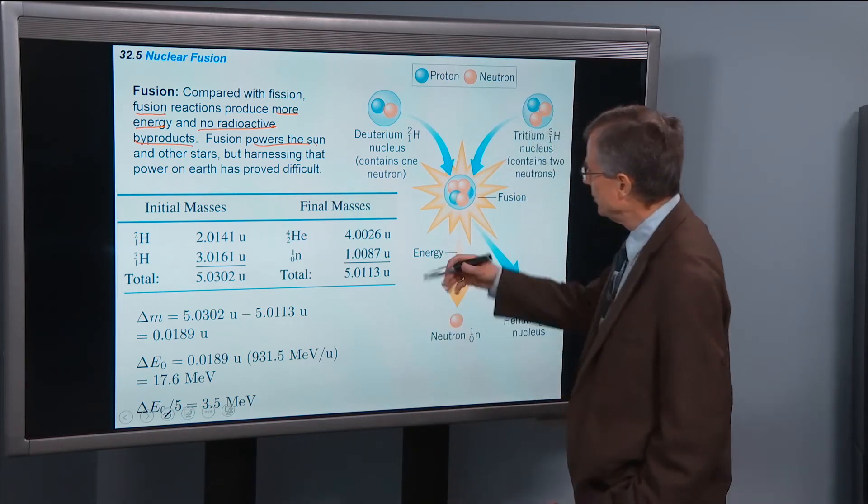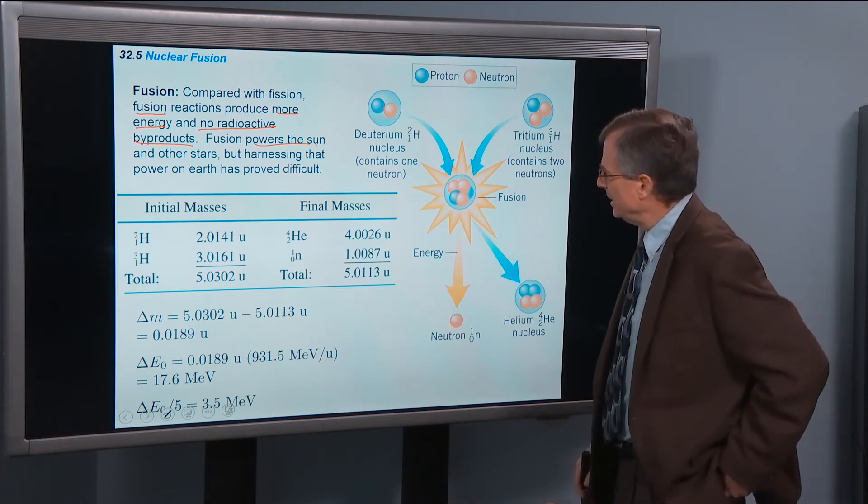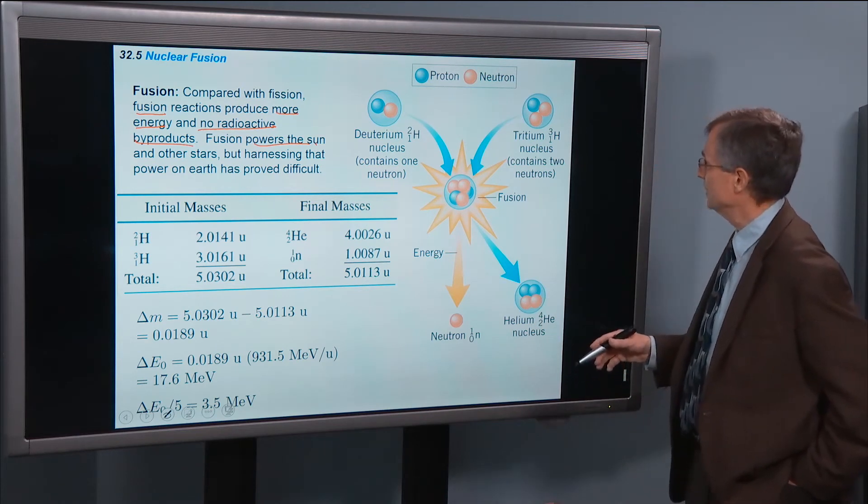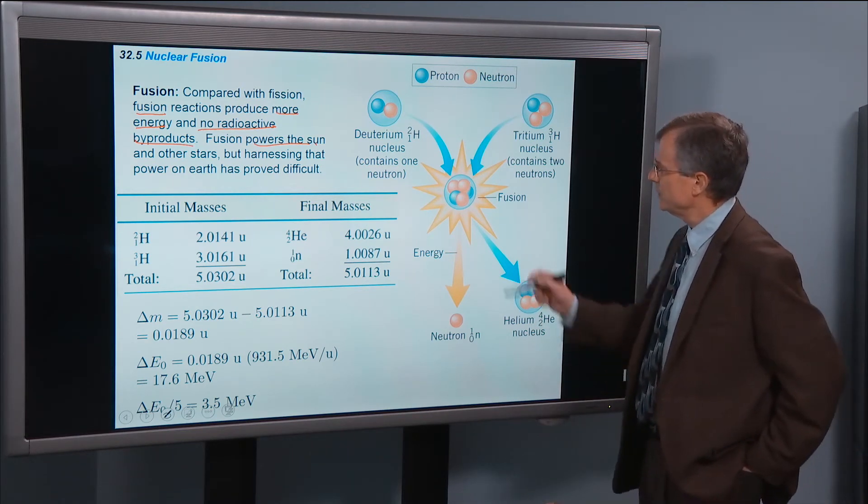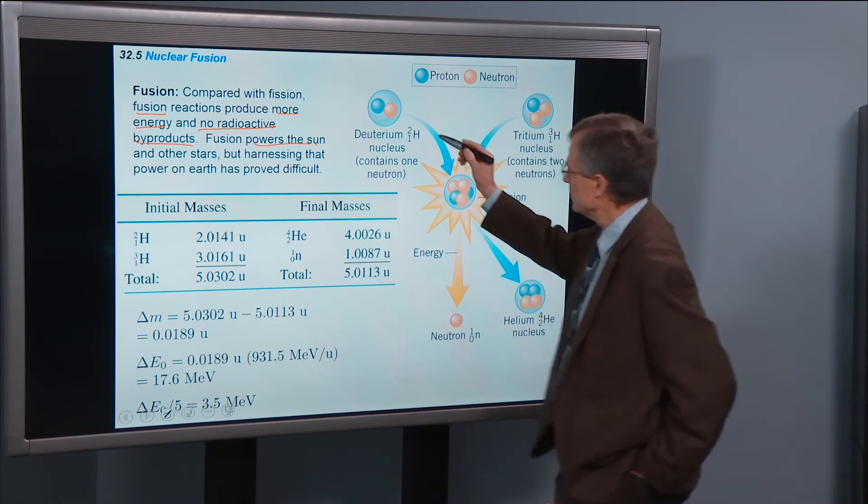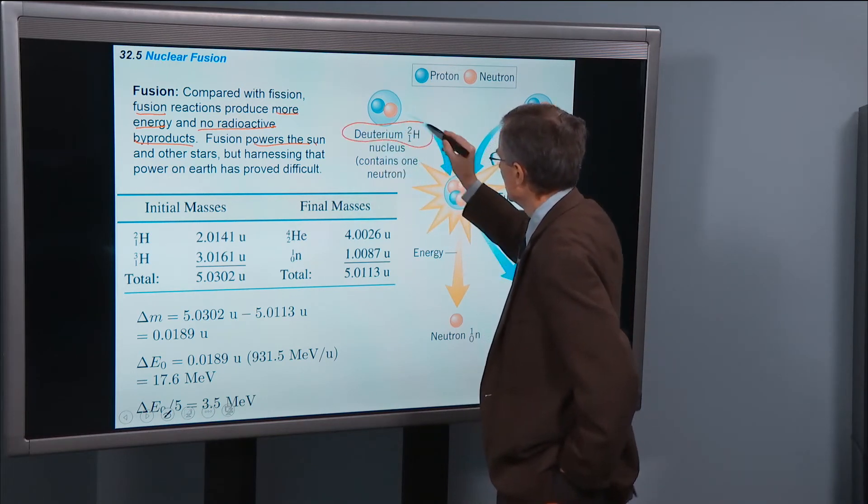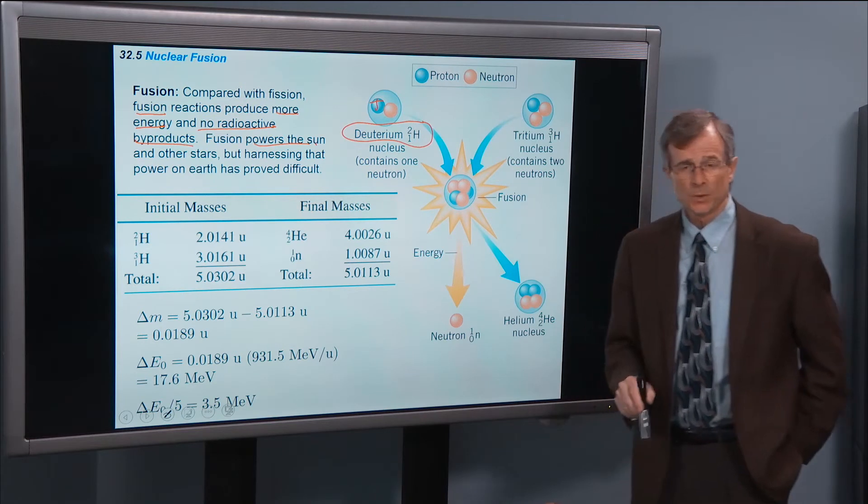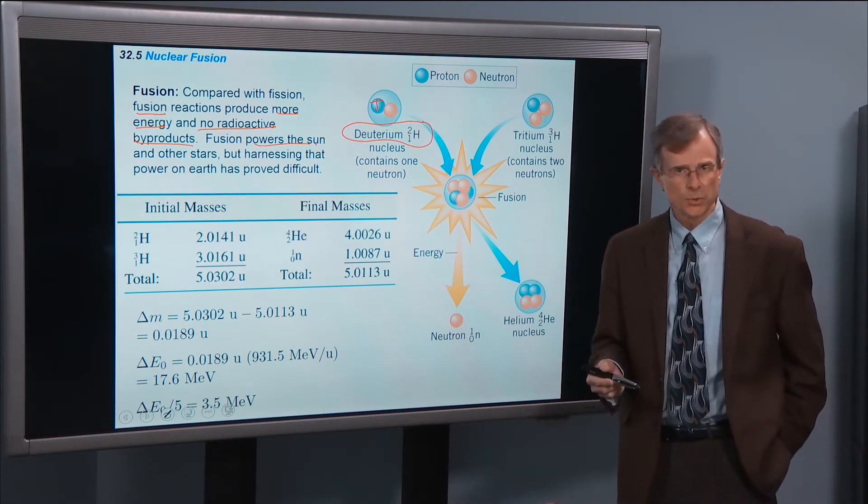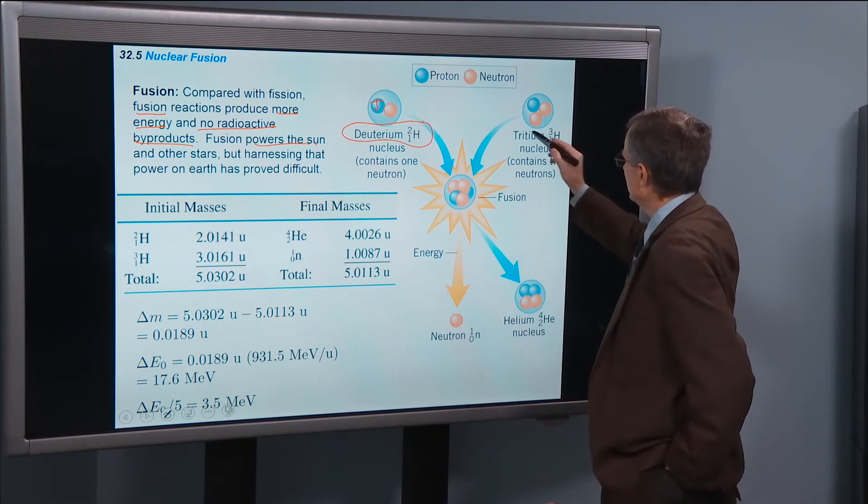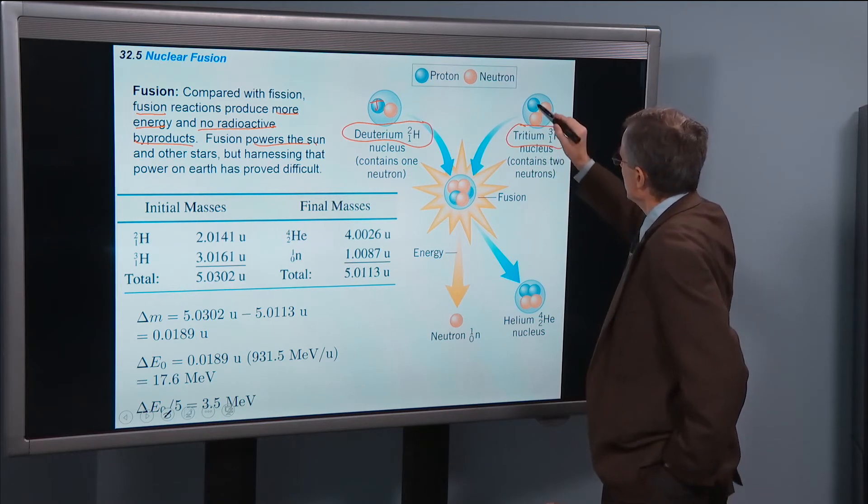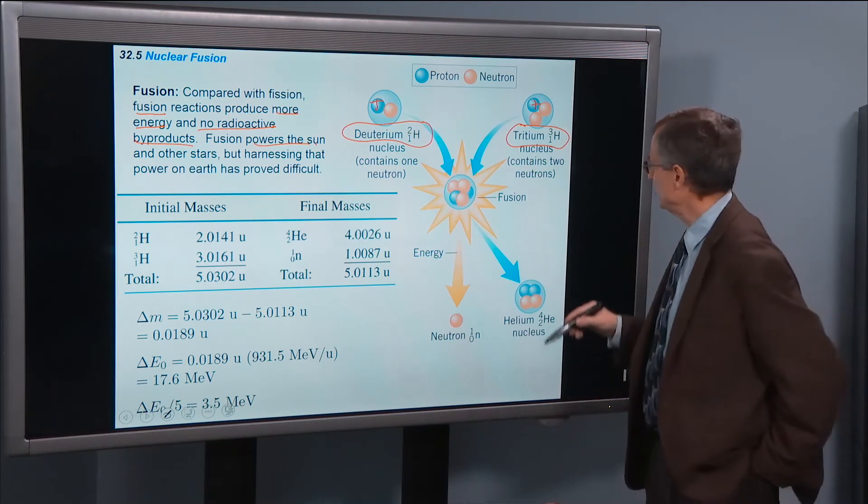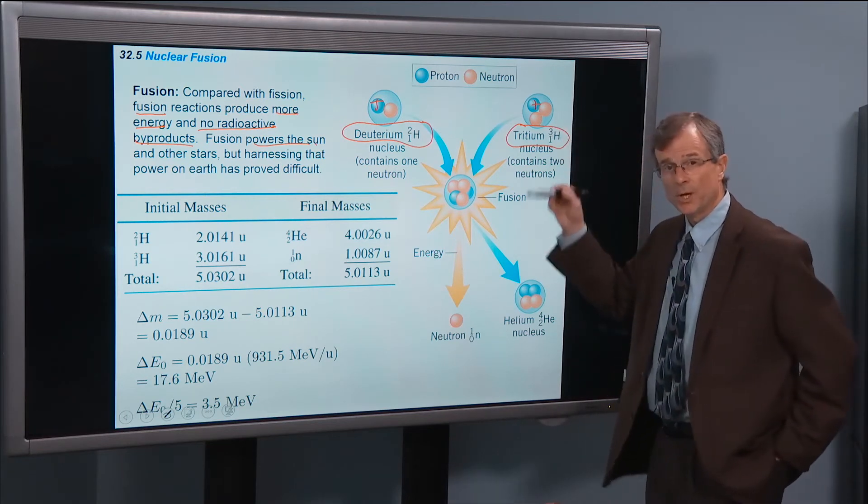So to do the calculation, the initial, so here's a bonafide reaction of two isotopes of hydrogen. This one's called deuterium. It has one proton and one neutron. So it looks like hydrogen, it's got an extra neutron. And then tritium has still the one proton, so it is hydrogen. It's an isotope of hydrogen, but it's got two neutrons.